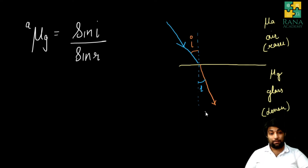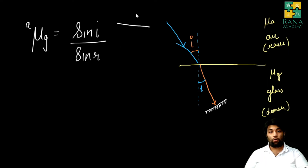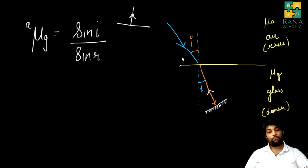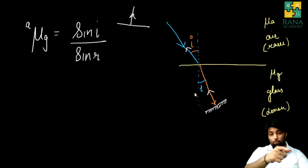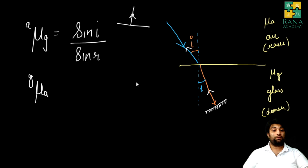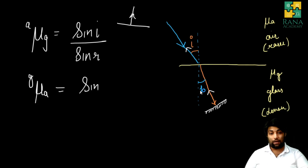Now suppose if we place a plane mirror perpendicularly to the direction of the ray of light. You know that if a ray of light falls normally on a plane mirror it will reflect back. So in this particular condition, when a ray of light falls normally on a plane mirror it will reflect back and retrace its own path. The principle of reversibility says that a ray of light can retrace its original path. Now if a ray of light is traveling from denser to rarer medium — that is, from glass to air — then according to Snell's law the refractive index of air with respect to glass is given by sine r upon sine i.